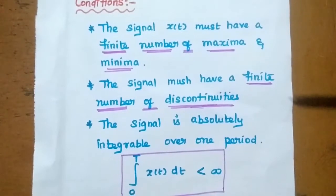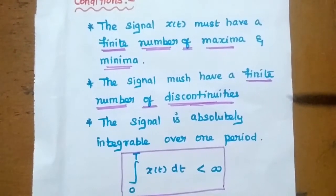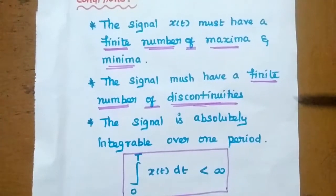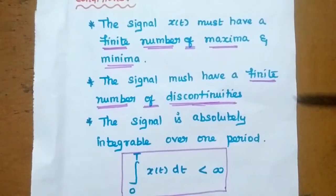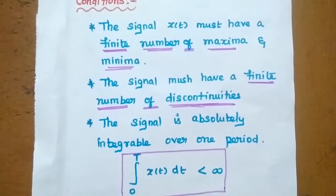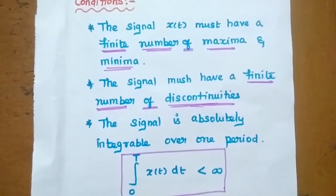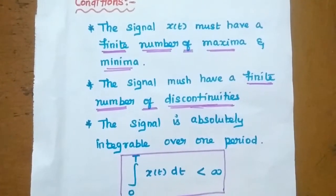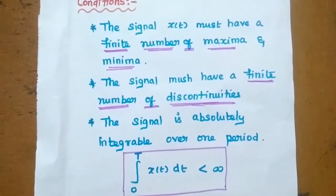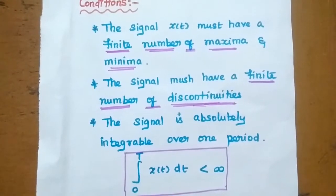One is, the signal X(t) must have a finite number of maxima and minima. That means, whichever signal is having finite number of maxima and minima, for that signal alone we can apply Fourier series. The second condition is the signal must have a finite number of discontinuities.